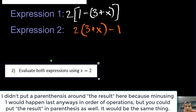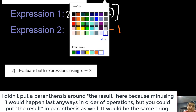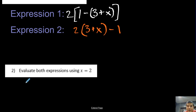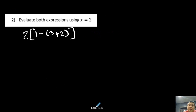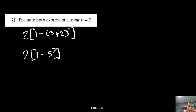Now evaluate both expressions using x equals 2. For expression 1, substituting 2 in: 2 times [1 minus (3 plus 2)]. We do what's inside the parentheses and brackets first — 3 plus 2 is 5, so we get 2 times (1 minus 5), which is 2 times negative 4, giving us negative 8.